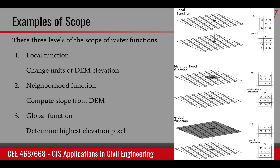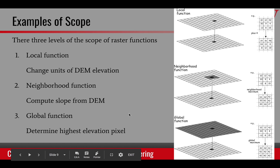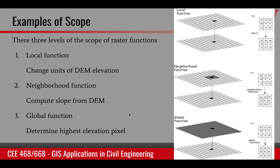But if we were trying to compute slope or aspect, then one value cannot be used to determine slope. We need some information in the neighborhood, so that would become a neighborhood function, where we take the values from the neighbors and compute the slope. And lastly, if we were trying to find the highest elevation in the image, then that would become a global function — we need to use the elevations of all the pixels to find the highest point. So that is the three levels of scope when applying raster functions.